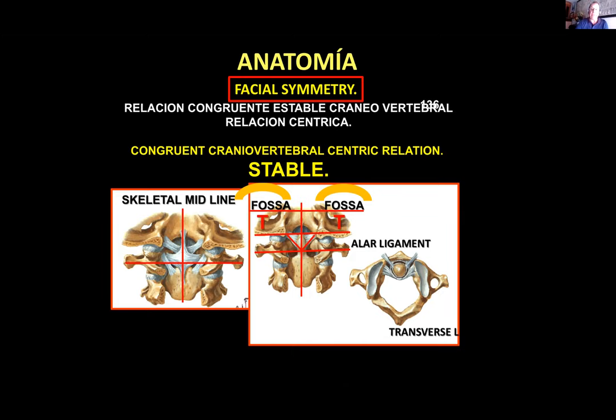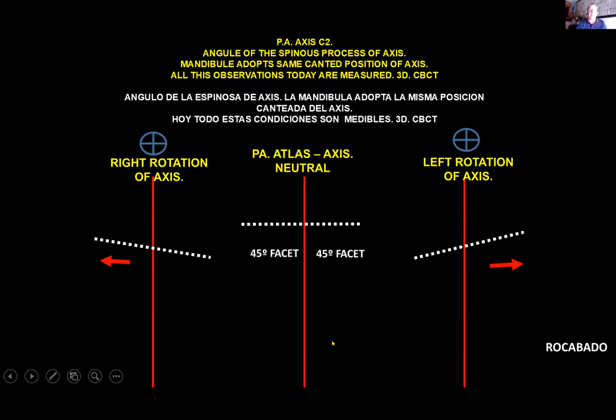The fossa will be horizontal only if the cranial vertebral joints follow this cruciate system, held by the alar ligaments in a horizontal position. That determines the horizontal position of the fossa on the right and left. With this arrangement, the weight of the head passes right through the center of the skeletal midline, continues through the body of C2, and transmits forces to the rest of the body. This is the basic alignment of the cranial vertebral joints to maintain a horizontal position of the cranium.